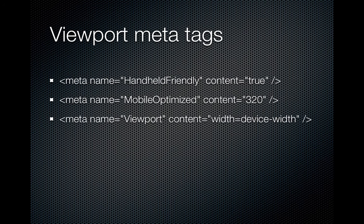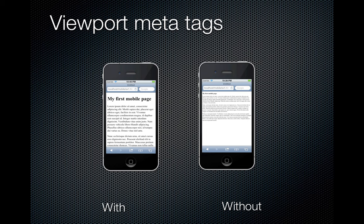Viewport meta tags are important — these go in the head section and tell the mobile browser how far to zoom in or out on content. Without defining the viewport, you can see the content looks far too zoomed out. The device chooses an arbitrary width value — in the case of the iPhone, something like 800 pixels, unless you specifically define it. If you define how many pixels wide you want it to be, you get a much more readable version of the content without needing to zoom in.